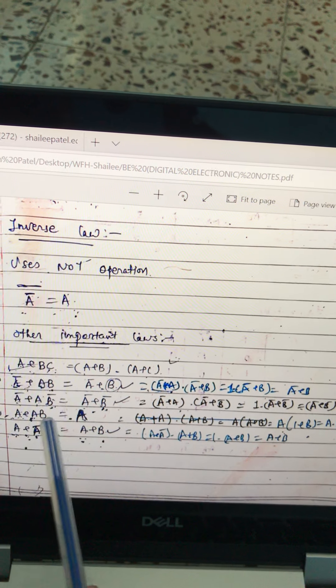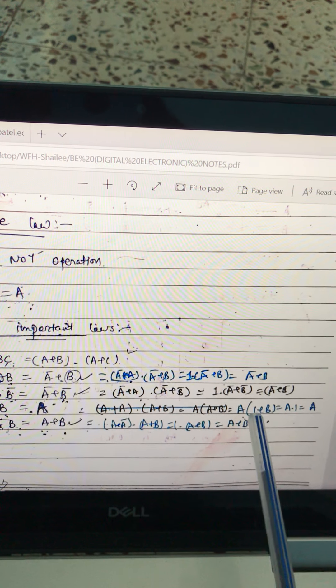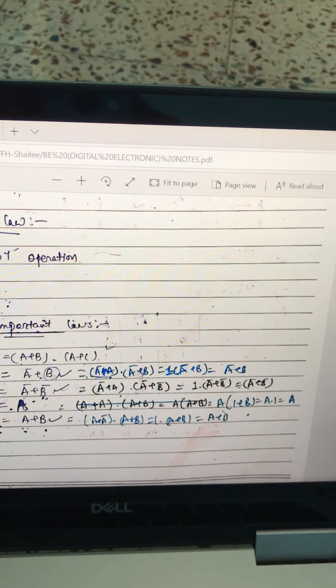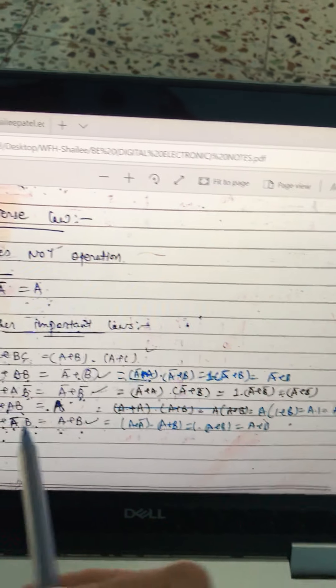Now A plus AB. Put A common. You will get B plus 1. So if it is B plus 1 will be 1, as in OR having 1 plus A equals 1. So that is how you will get A.